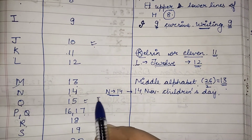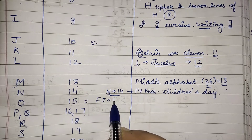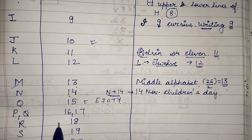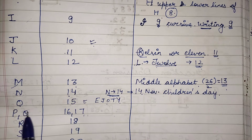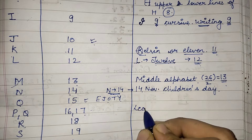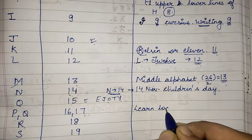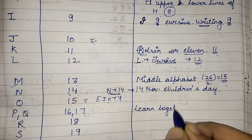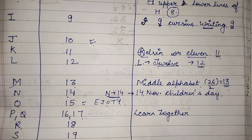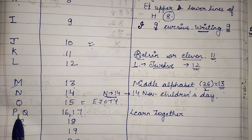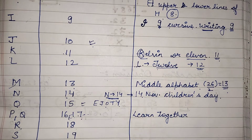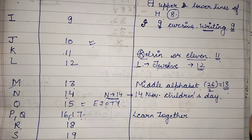O we have already remembered with the EJOTY trick — O comes at the fifteenth position. Coming to P and Q, we can learn them together: PQ comes at positions sixteen and seventeen. Just run 'PQ sixteen seventeen' together and it will be easier to remember.